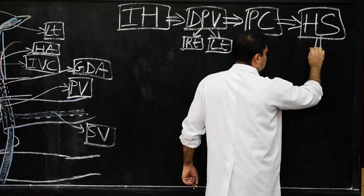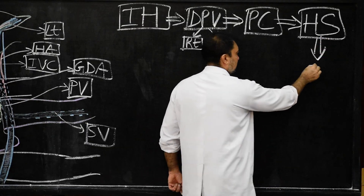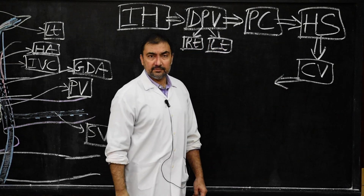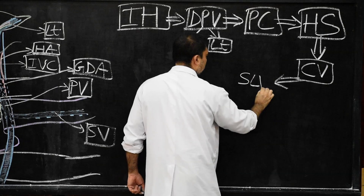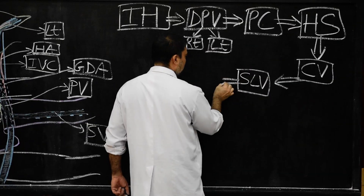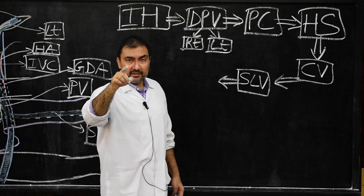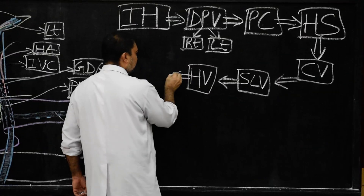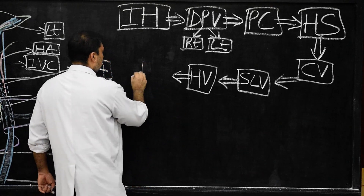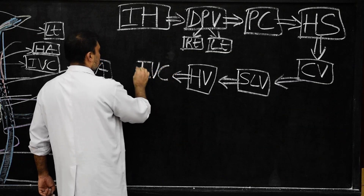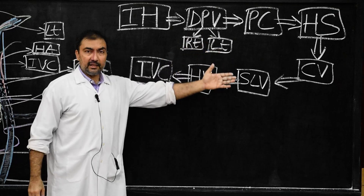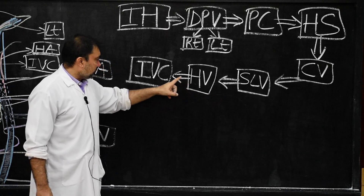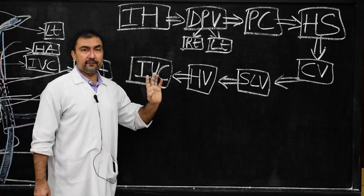From the hepatic sinusoids, blood passes into the central vein, then into the sublobular veins, then into the hepatic veins, and finally drains into the inferior vena cava. This is how blood circulates in the intra-hepatic portion.